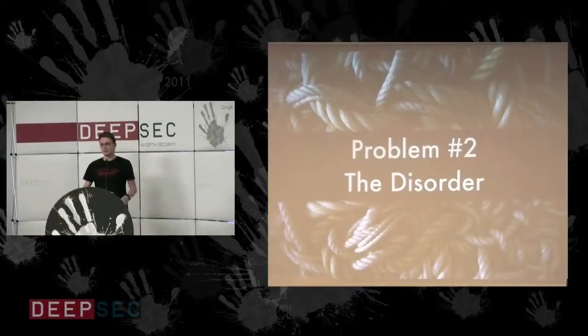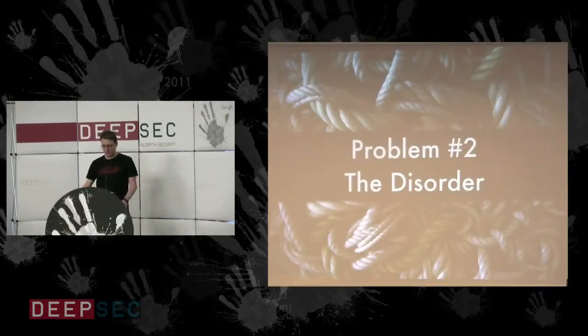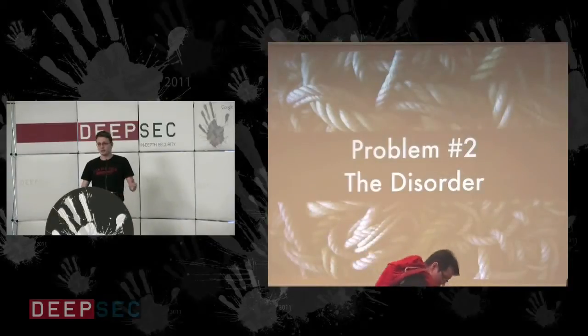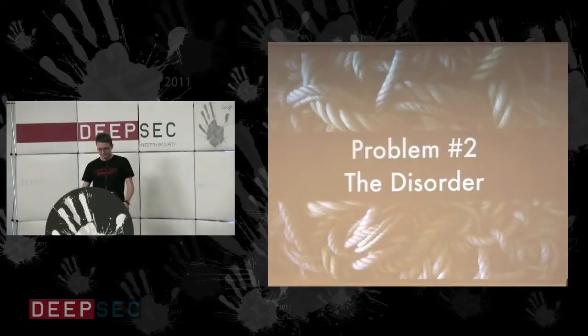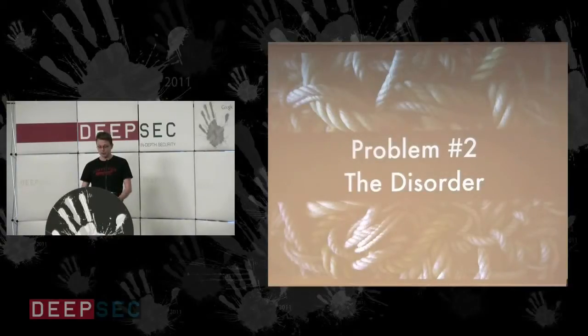The second problem I see is the disorder. You have these many authority documents, these controls and sometimes they have some overlaps. You have some controls which nearly say the same but don't really. You need an internal document management system where you track these authority documents. Usually this means there's just one guy tracking just that stuff and we don't really have the time to have one person only doing that.